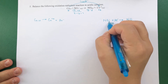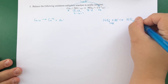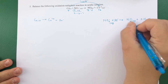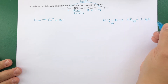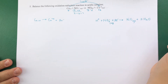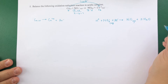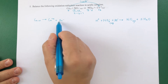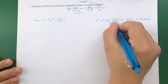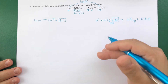Adding two waters to the right side makes the oxygen count three on each side, but that introduces four hydrogens on the right, so I add four H⁺ to the left side. This half-reaction is now balanced. Now I need the least common multiple for the electrons: this half-reaction has two electrons and the other has three, so I cross-multiply — multiply the copper half-reaction by three and the nitrogen half-reaction by two.